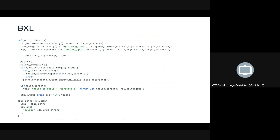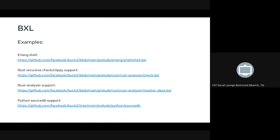Here's an example — from Erlang, an ebin pass. What it's doing is it does a query over a graph, finds the Erlang tests and app targets, and then just tries to build all of them. It's just Starlark code. We have real BXL code in use: Erlang Shell is like a REPL for your Erlang dependencies. Recursive check and Clippy support for Rust is built via BXL. Our Rust Analyzer integration is primarily BXL, and Python source DB is another one — also IDE support.